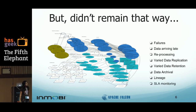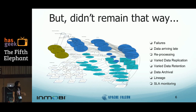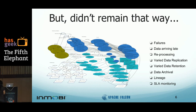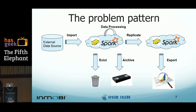We had to handle failures across these pipelines. Data used to arrive late and we needed to do reprocessing. Each pipeline had different data replication, replay, and archival requirements. We needed stricter SLAs — the customer wouldn't wait for an entire day to get billed, the burn rate had to be calculated on an hour-to-hour basis. So we were struggling to operate the whole system, and that's when we said let's take a step back and see how we can solve this better.